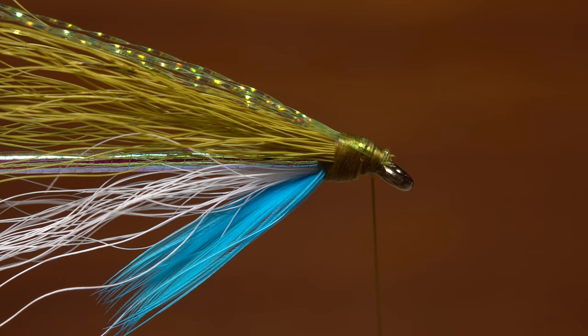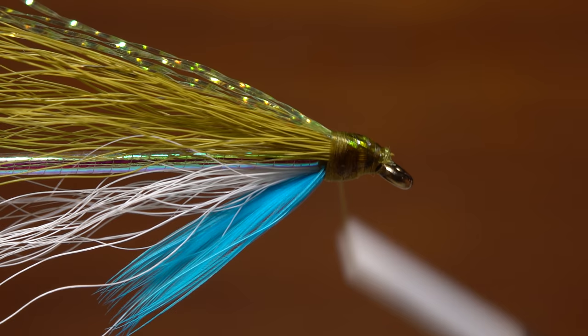An extremely small drop of super glue, here Fly Tyer Z-Ment, applied to the thread wraps at this point will help ensure none of the materials tied in thus far will pull free. Take tight rearward wraps of tying thread to set the adhesive and really lock things down.